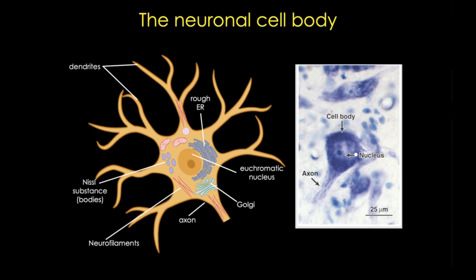Improper assembly or overproduction in motor neurons of these intermediate filaments can result in loss of these filaments, and that can result in diseases such as amyotrophic lateral sclerosis, or ALS.